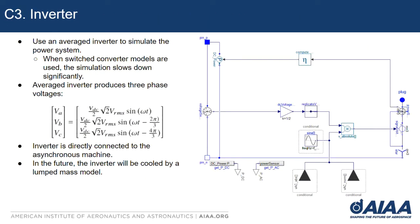The inverter here is an averaged inverter. We use the averaged inverter to simulate the system instead of a switched inverter because in Modelica, every single time a transistor changes state, the model will need to be re-evaluated. In a system like this, the transistors will be changing at a rate in the hundreds of kilohertz frequency range, so the model would need to be simulated at that time scale — that ends up slowing down the simulation speed significantly, and the averaged inverter model is an adequate replacement for the time being. The inverter produces the three-phase voltages and is directly connected to the asynchronous machine. In the future, the inverter will also be cooled by a lumped mass model.